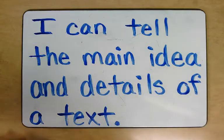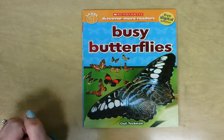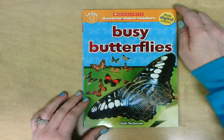The learning objective for this lesson is: I can tell the main idea and details of a text. I am going to read you this book today, which is called Busy Butterflies. When we are done reading it, we are going to talk about what the main idea of the book was and some details to support that main idea.